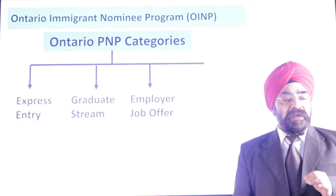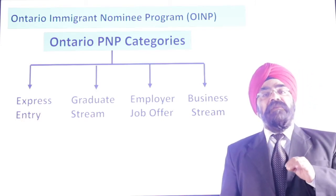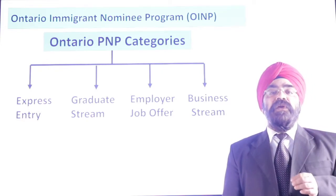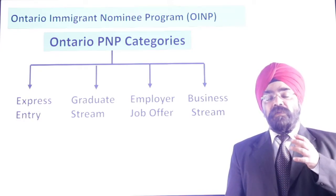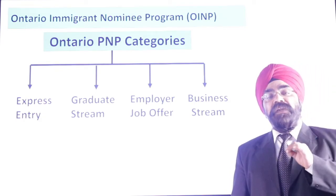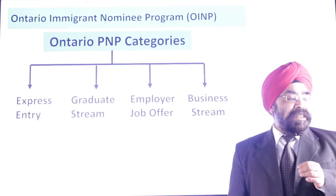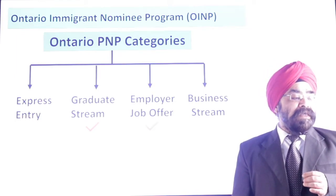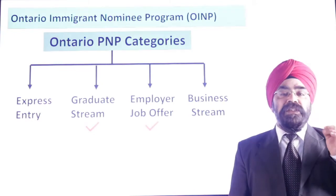The third category is Employer Job Offer, and the fourth is Business Stream. Entrepreneurs are very important for Canada because small businesses provide jobs and boost the economy, so there are programs for entrepreneurs at both federal and provincial levels. However, today's discussion is limited to Graduate Stream and Employer Job Offer Stream, because the mega draw happened in these two categories.